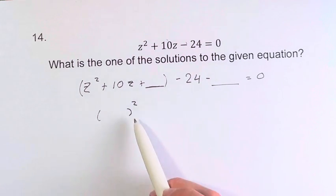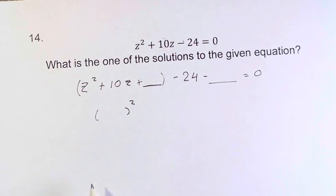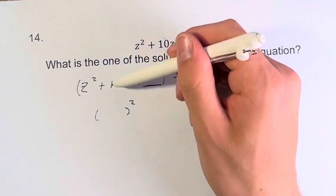So how do we find what value here turns this trinomial, this three terms, into something squared? Well, the trick is you take this number, 10...